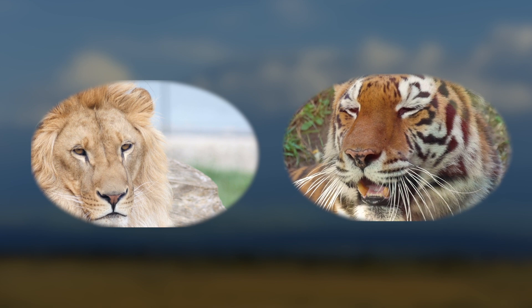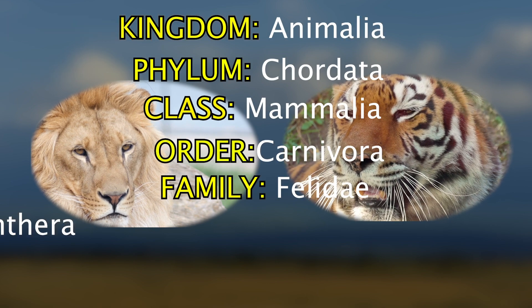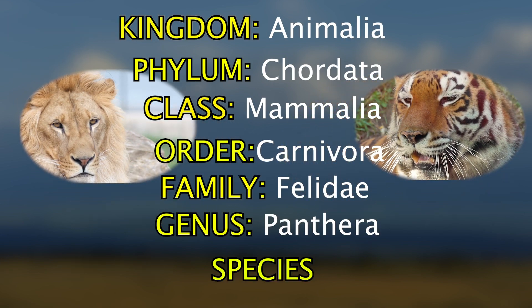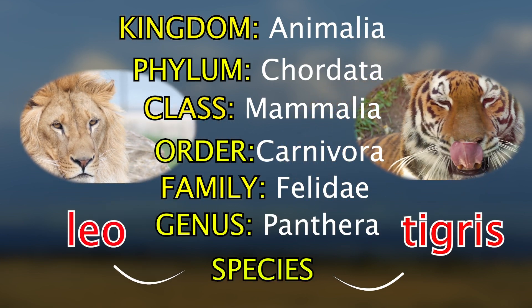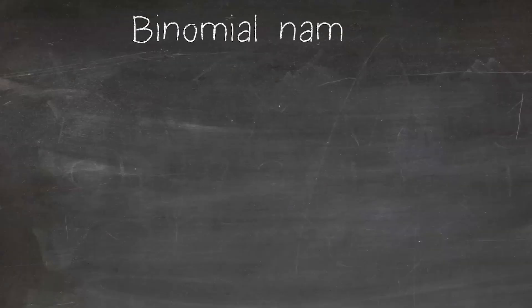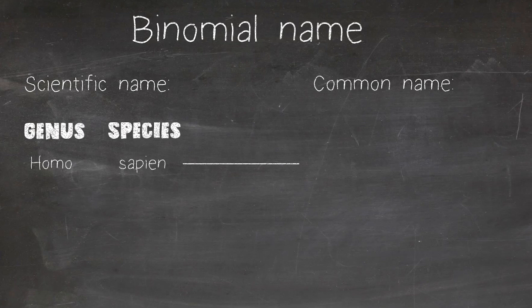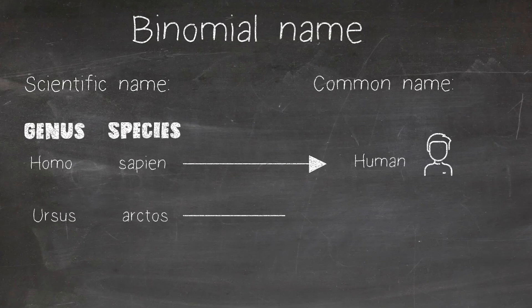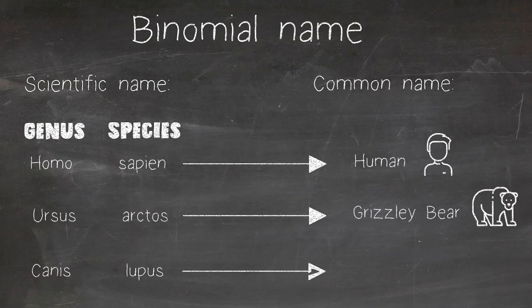So what is the binomial name? The binomial system of naming species uses Latin words. This is really helpful for scientists across the globe when they want to communicate about a particular animal. Look at the three examples on the board — the scientific name and the common name. The genus: Homo. Species: Sapien. The common name is human.